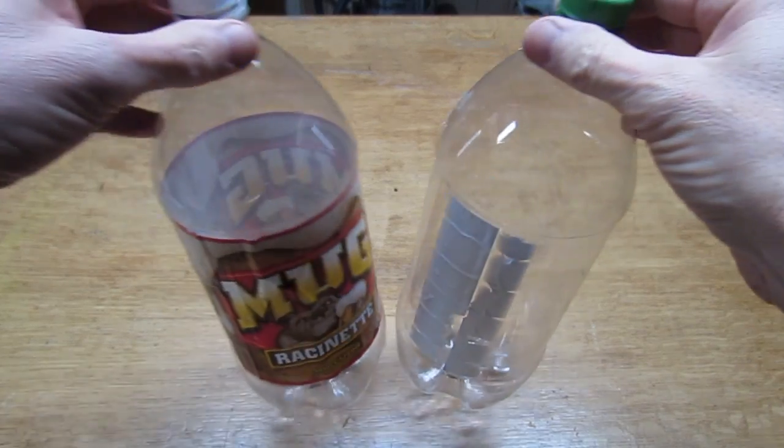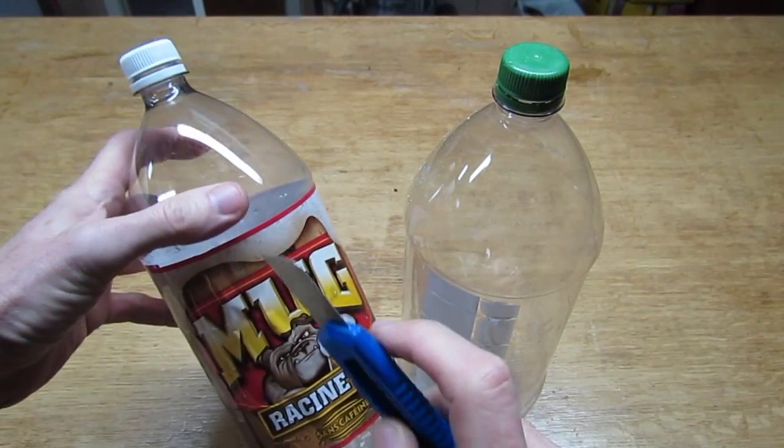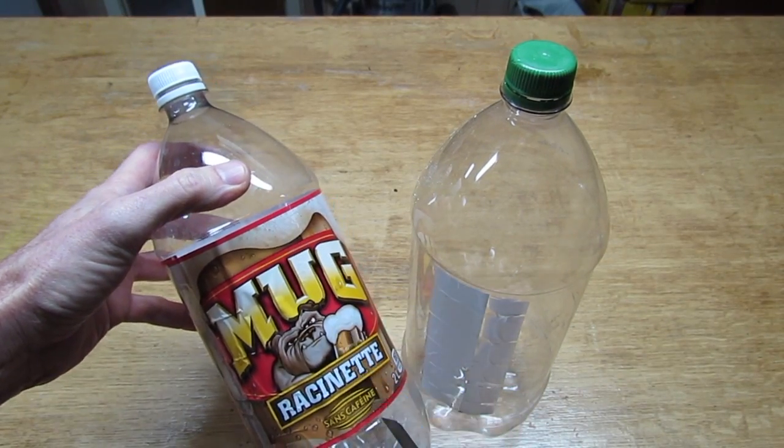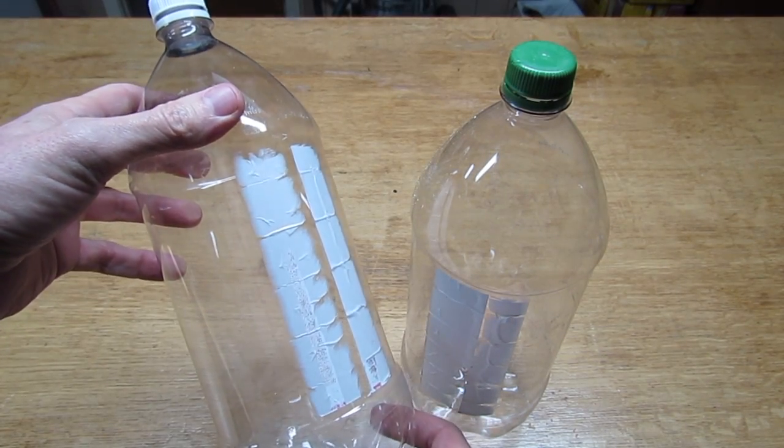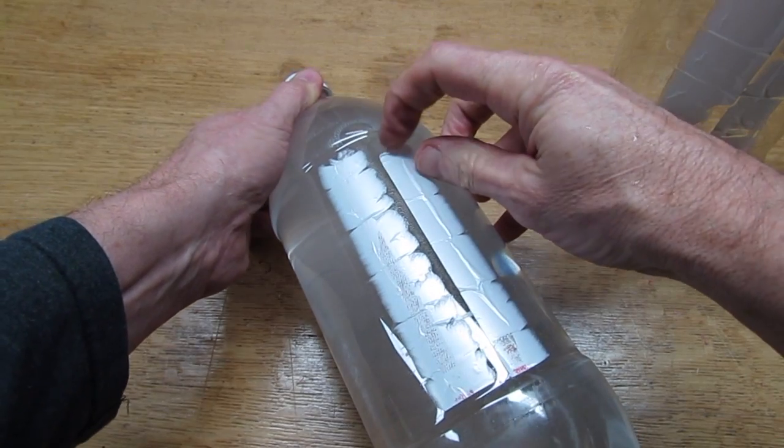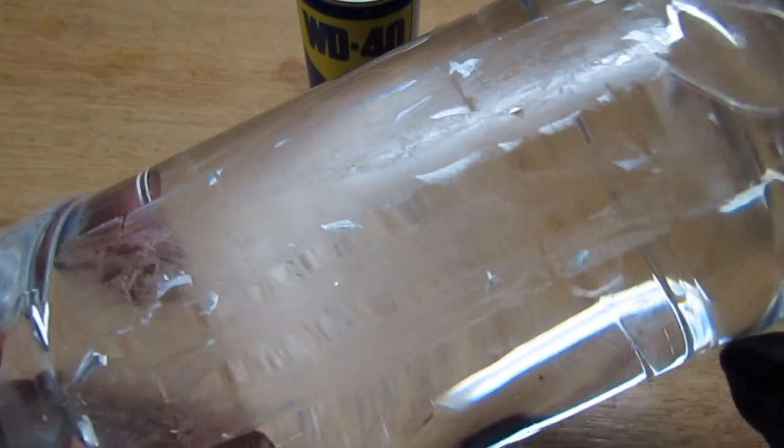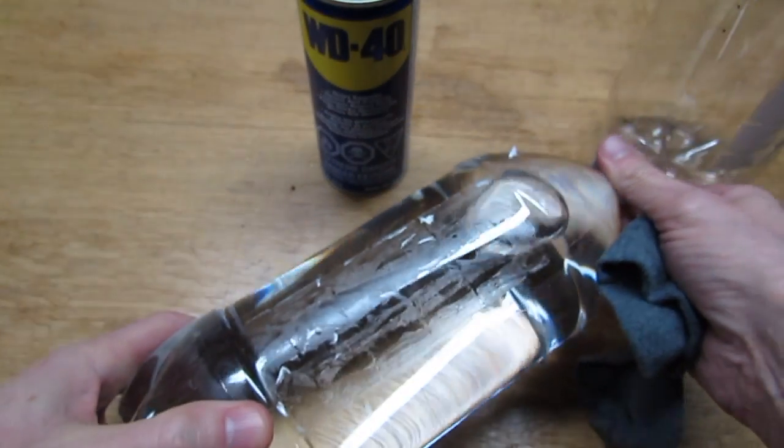First of all, get yourself a couple of two liter pop bottles with the caps and get a knife and cut the labels off. Once you've got the labels off, just fill up the bottle with hot water. It softens up the label and it comes right off. The sticky residue that's left over afterwards can be taken off easily with a bit of WD-40.